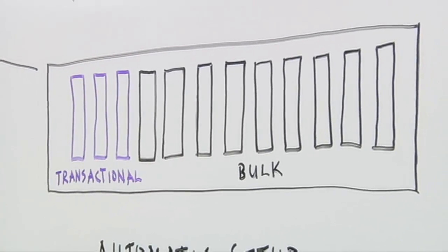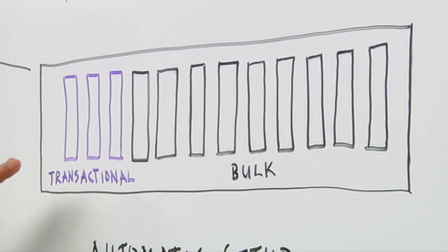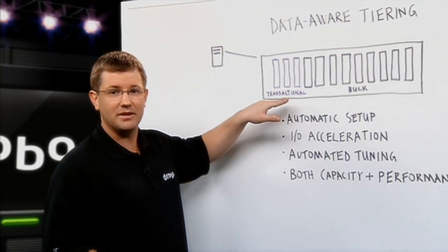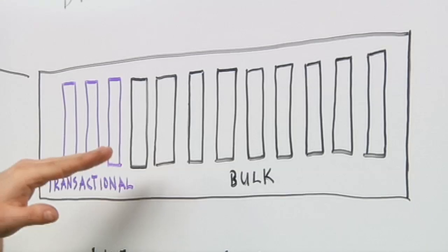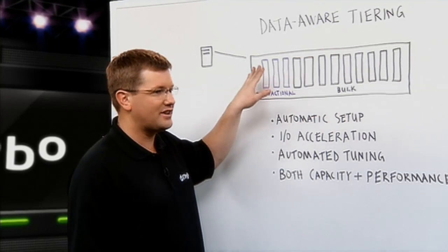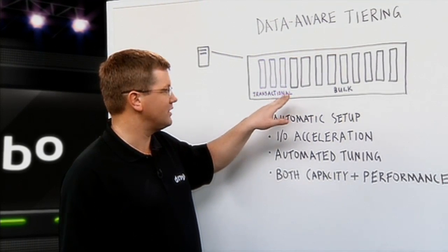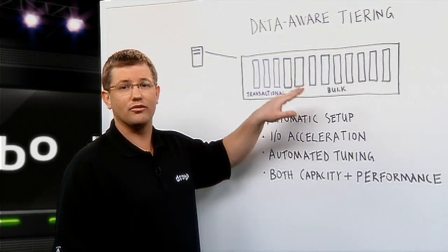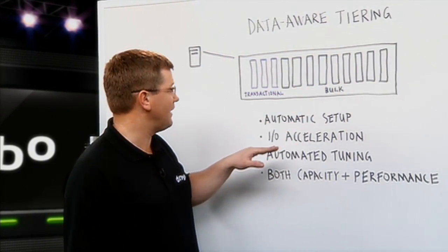For solid state drives, they handle transactional data or transactional IOs really well. These are smaller IOs that are more random in nature. And hard disk drives will be used to handle bulk data or larger IOs, sequential IOs. Transactional IOs may come from a database application. Bulk IOs may come from your file server or from a backup to disk type of application.